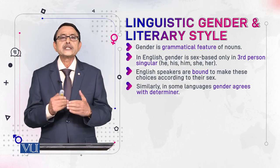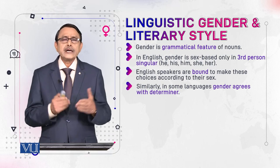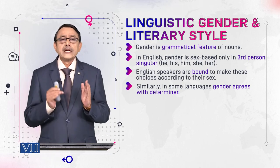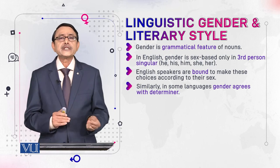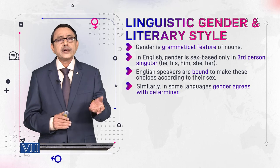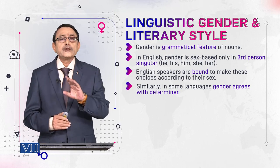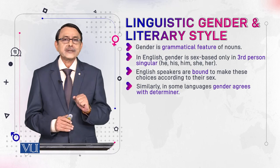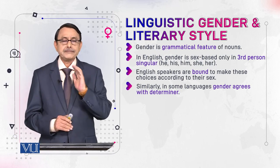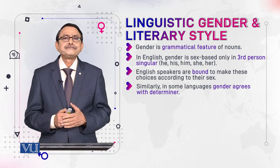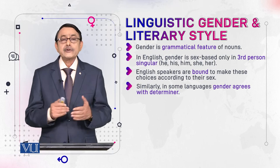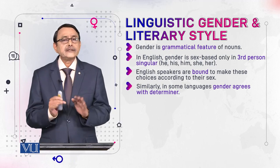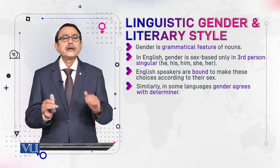The form of the determiner and gender agree with each other — they influence each other's form. You can understand it. You know how the pronoun after a preposition changes its form — it becomes objective. You would say 'to me,' not 'to I'; you would say 'to him,' not 'to he.' So this is agreement — case agreement. Here we are talking about gender agreement between determiner and gender, and this is not found in English but is found in French, for example.